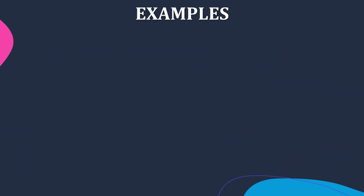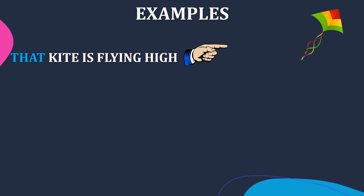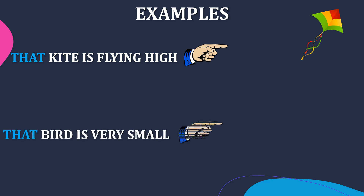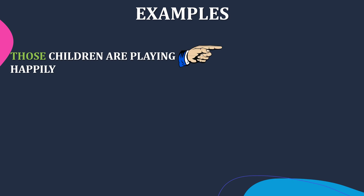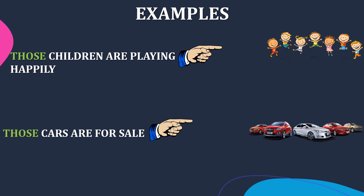The next example: 'That kite is flying high.' 'That bird is very small.' You are talking about a singular object — kite and bird — that is far away from you, so you use the adjective 'that' there. 'Those children are playing happily.' 'Those cars are for sale.' You are talking about plural nouns — children and cars — that are far away from you, so you use the adjective 'those' there.